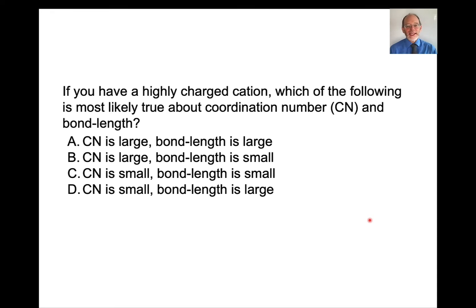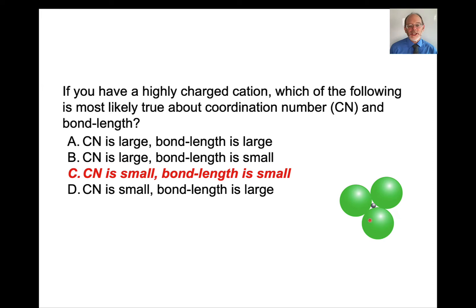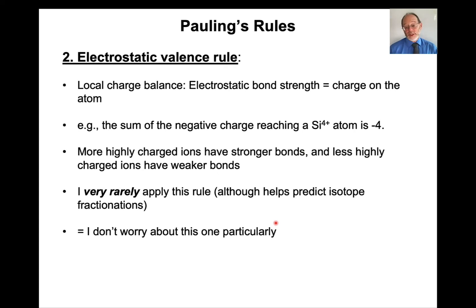Here's a question: if you have a highly charged cation, does it have a large coordination number with many anions packed around it, or a small one with few anions? And is the bond length large or small? The answer is that both the coordination number and the bond length are small. A highly charged cation has a very small radius, so very few anions pack around it — like this carbonate molecule — giving a small coordination number and a small total bond length.